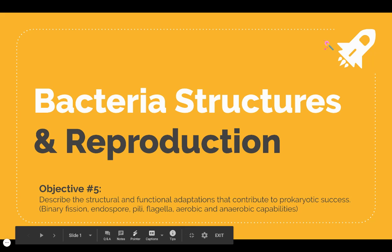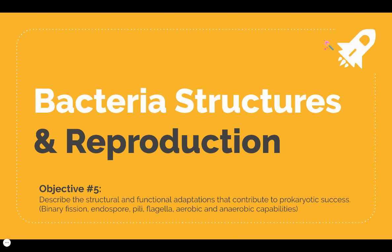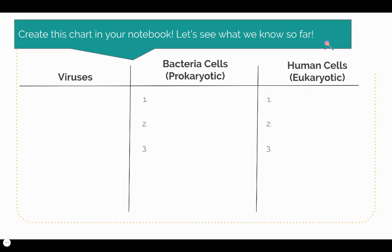This portion of the screencast is going to be focusing on objective number five, where we will describe the structural and functional adaptations that contribute to prokaryotic success. To start us off, I'd like you to make this chart in your notebook. We are going to be comparing viruses versus prokaryotic cells versus eukaryotic cells. We will be doing viruses together and then I'll give you a chance to think about what you remember from unit three on prokaryotic versus eukaryotic cells.